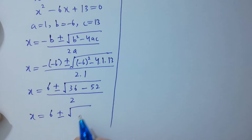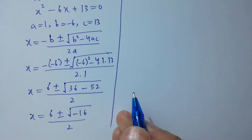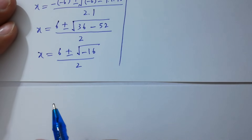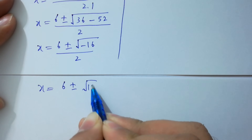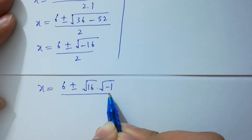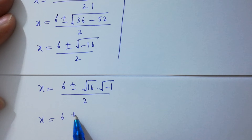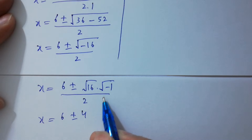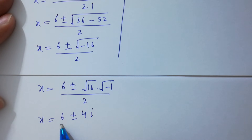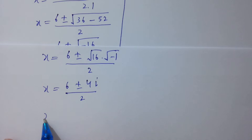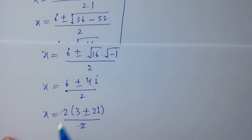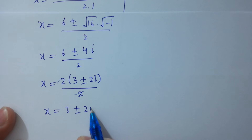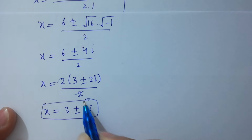This simplifies to x equals (6 plus or minus square root of minus 16) over 2, which equals (6 plus or minus square root of 16 times square root of minus 1) over 2. Since square root of minus 1 is i, we get x equals (6 plus or minus 4i) over 2. Cancelling the common factor of 2, x equals 3 plus or minus 2i. So x has two complex solutions.